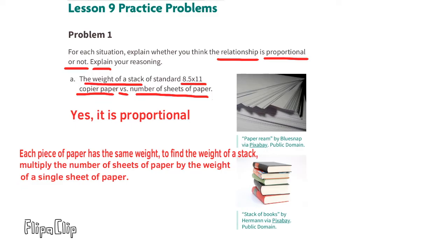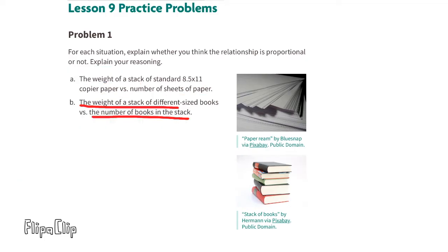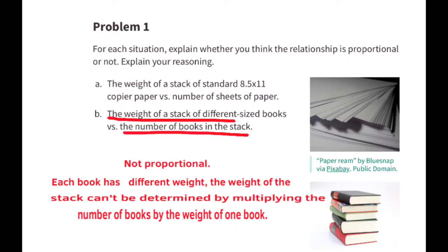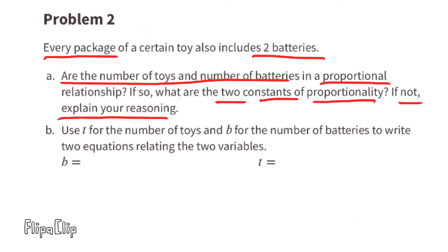Part b — the weight of a stack of different sized books versus the number of books in the stack. This situation is not proportional. Each book has a different weight, so the weight of the stack can't be determined by multiplying the number of books by the weight of one book.